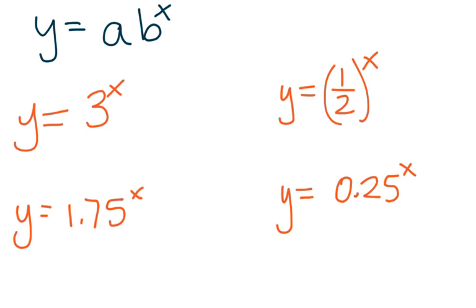If we rewrite the base as 1 plus r, the r will tell us the percent or the rate of change. And sometimes it might be 1, we might have to write 1 minus r, but that r is going to indicate to us what percent is this quantity changing or growing by. So let's take a couple of examples.